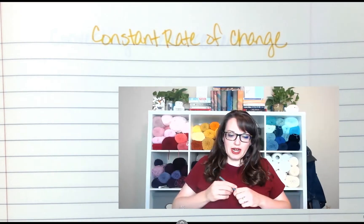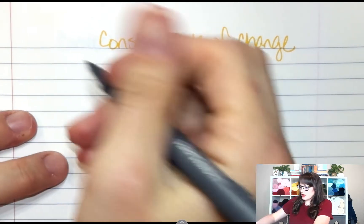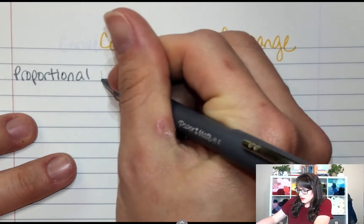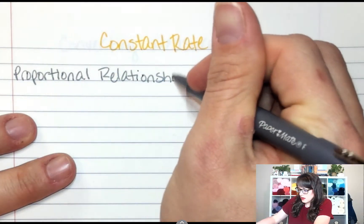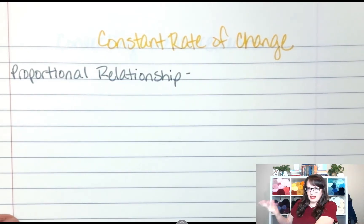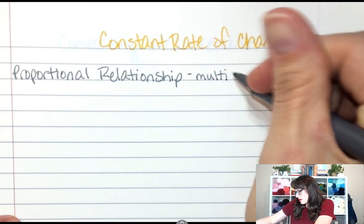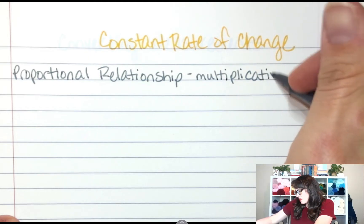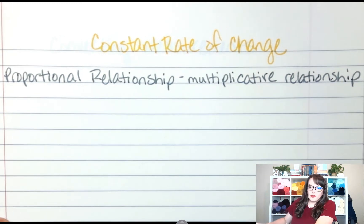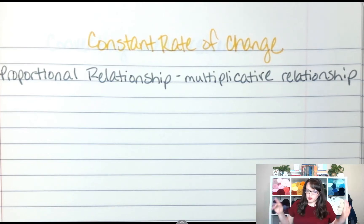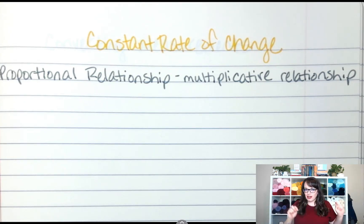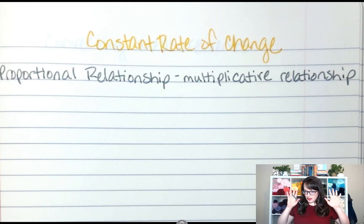So remember when we talked about proportionality. Let's review real quick just a proportional relationship. A proportional relationship is multiplicative which means it's multiplying and dividing. I repeat. It is multiplying. It is dividing. Do not add. Do not subtract. Because if one thing is adding five that does not mean add five to the other one. Multiplying and dividing.